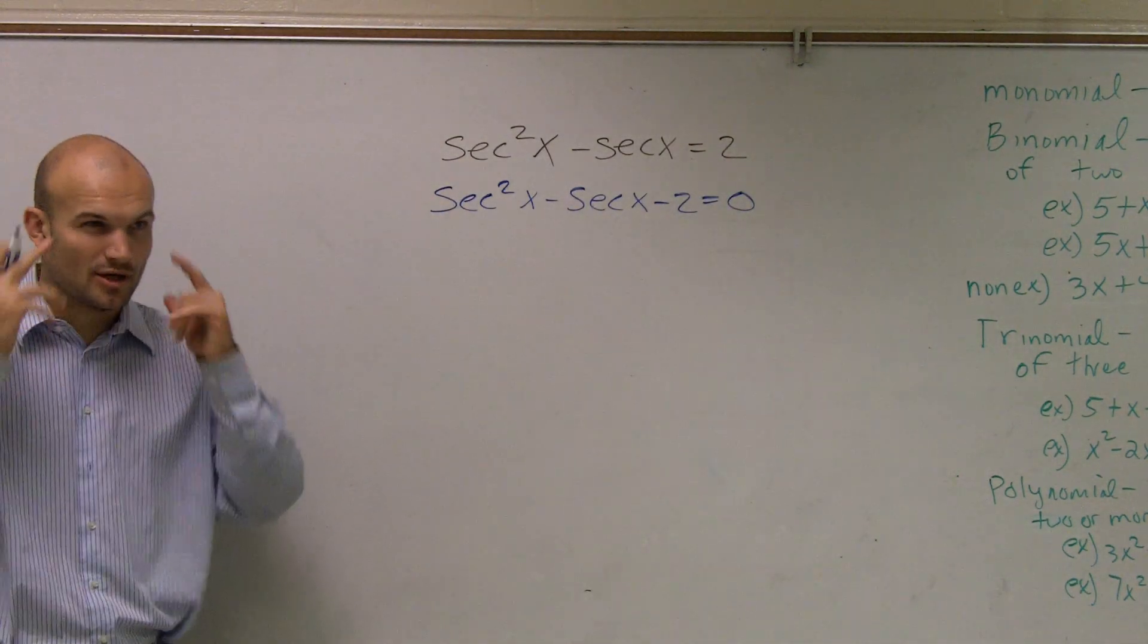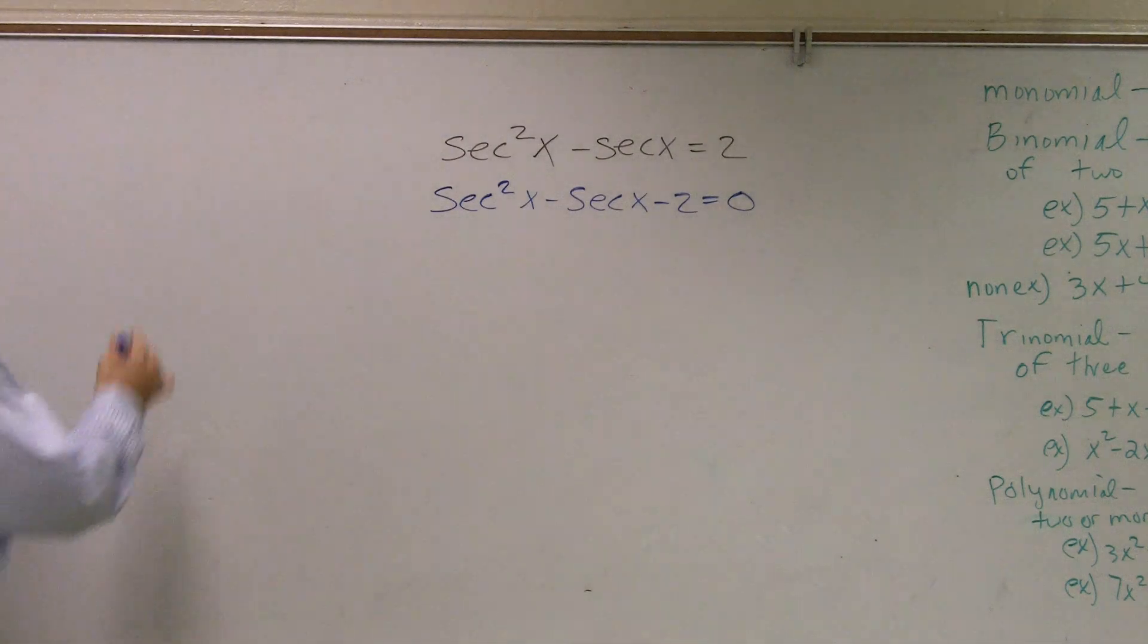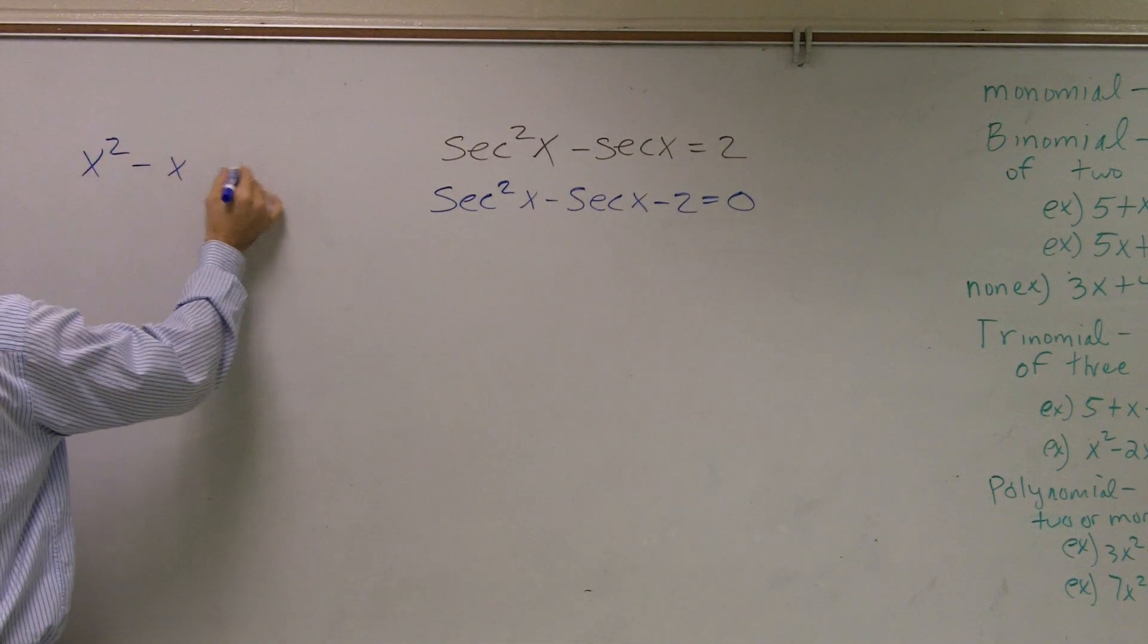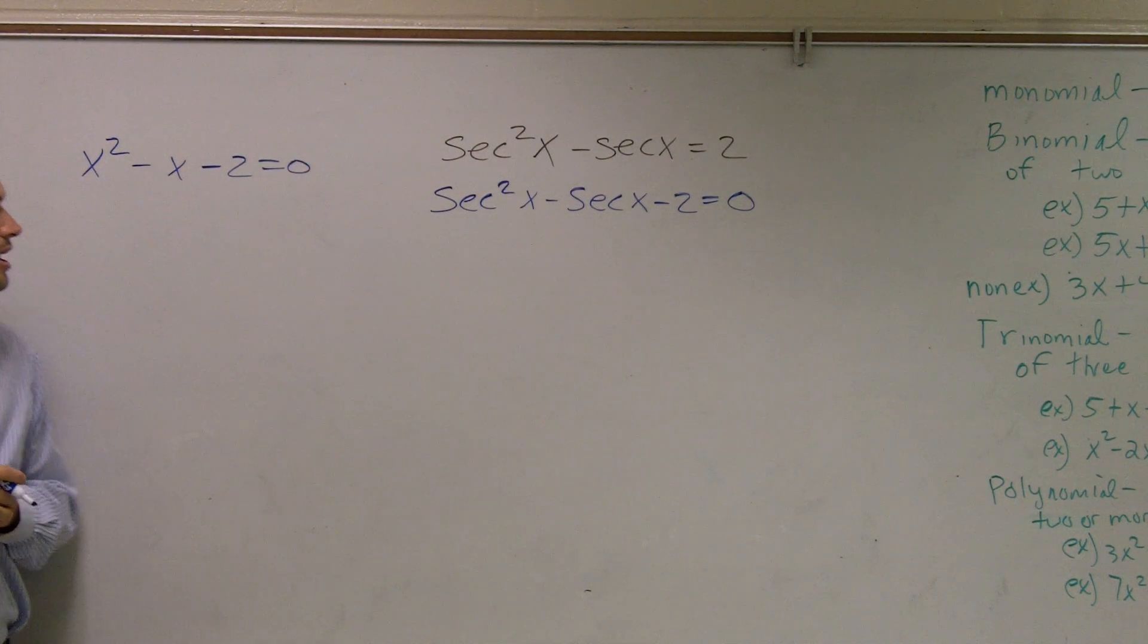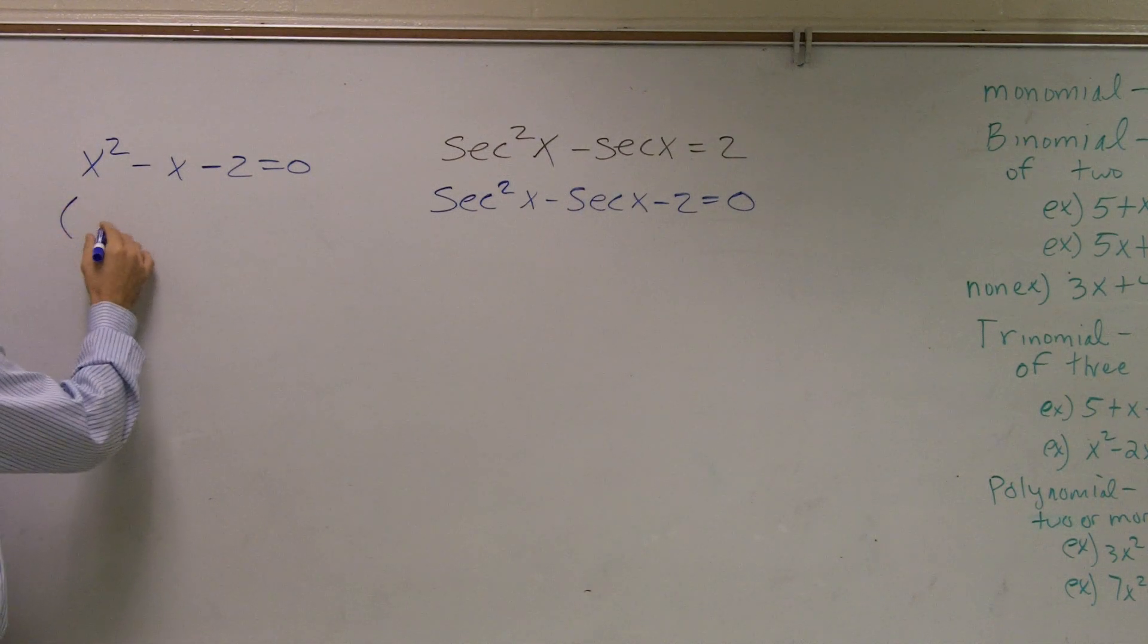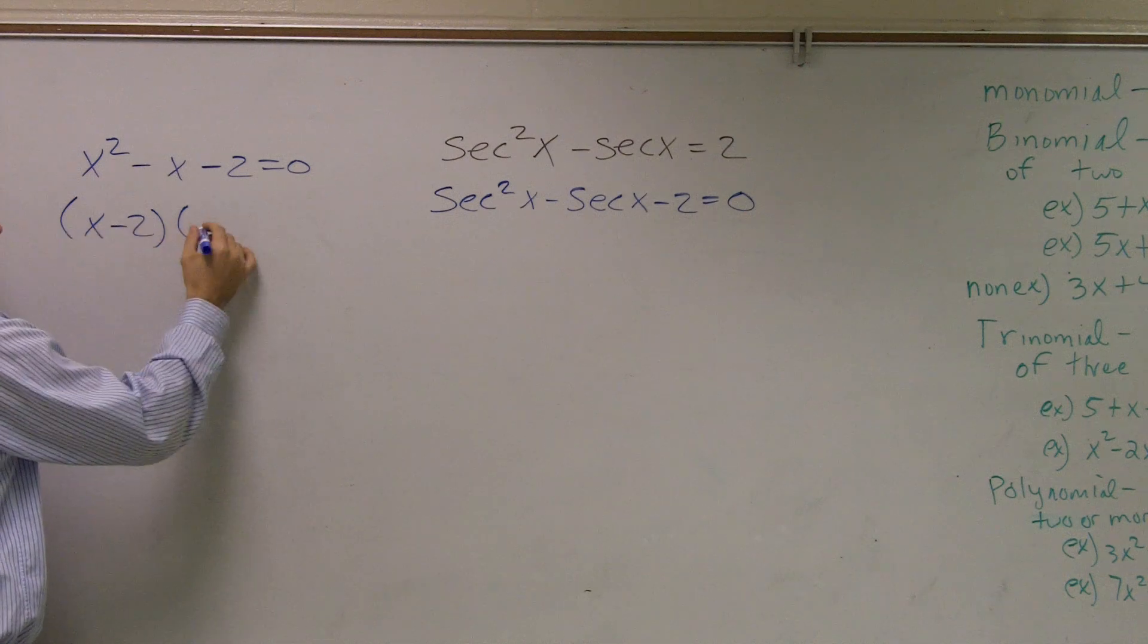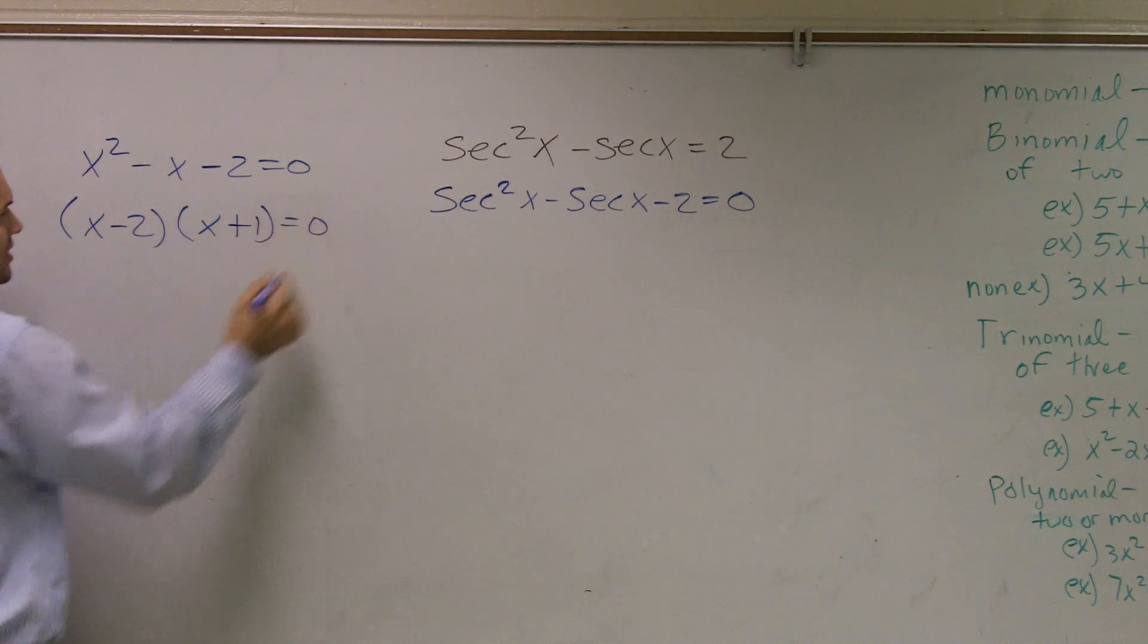Now some of you might be a little bit vague to see how you would factor this. So what I would recommend is to eliminate or just forget about the secants for a second and just see if you could factor this trinomial as it is there. And when you do that, what you guys have noticed is x minus 2 times x plus 1 equals 0 when you factor it.